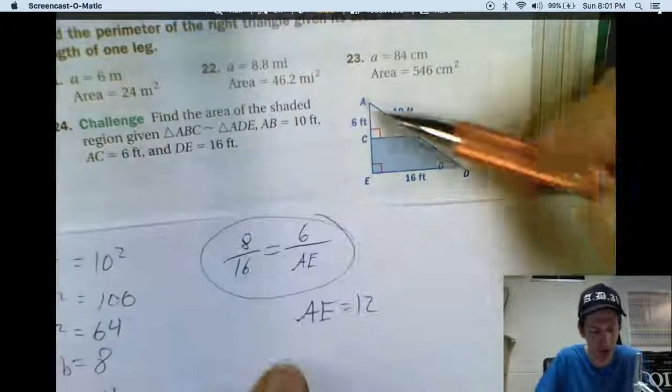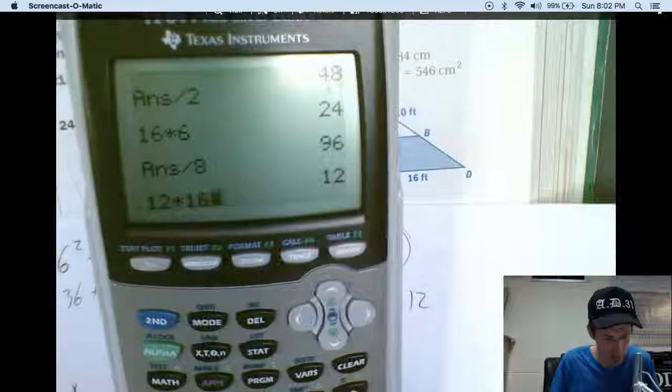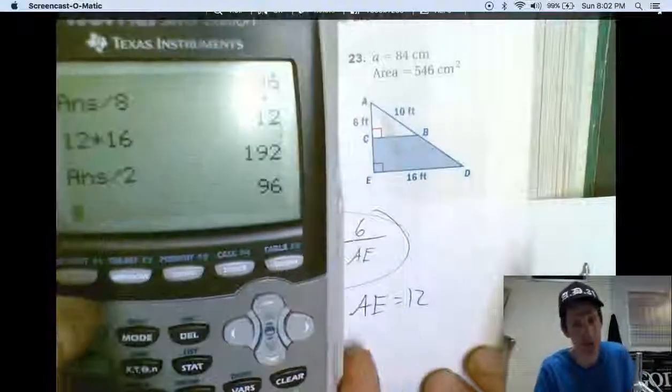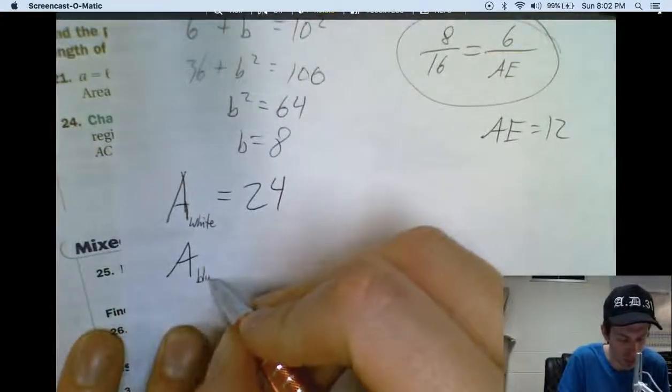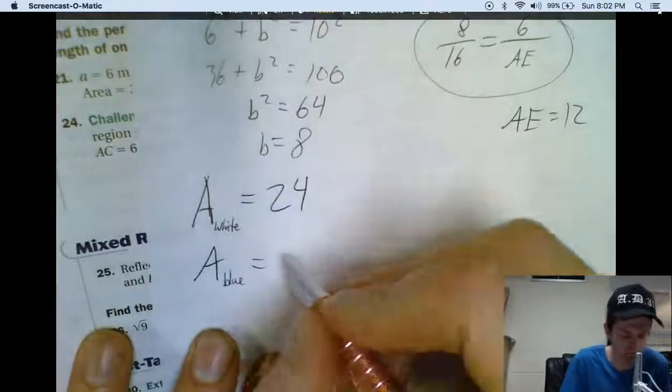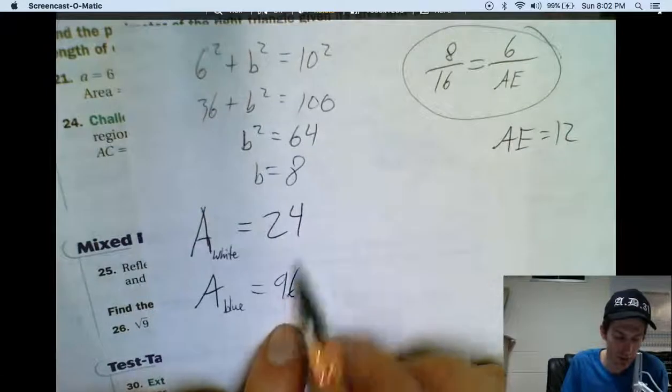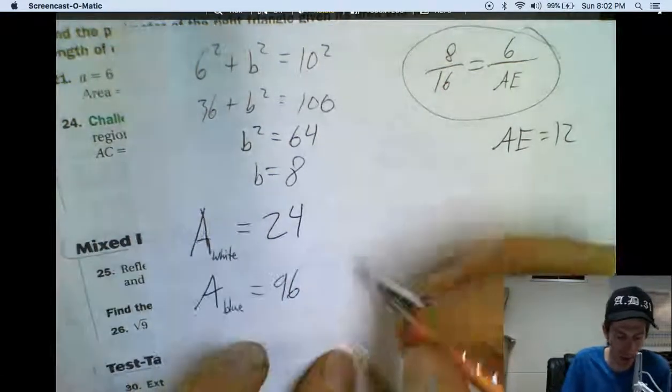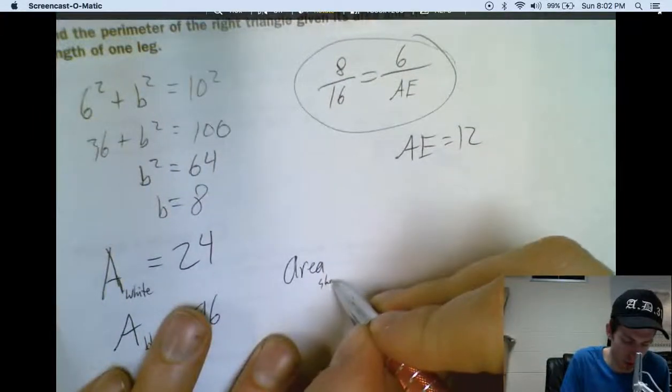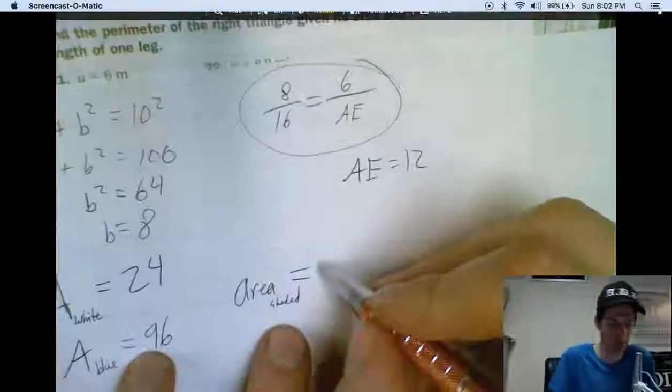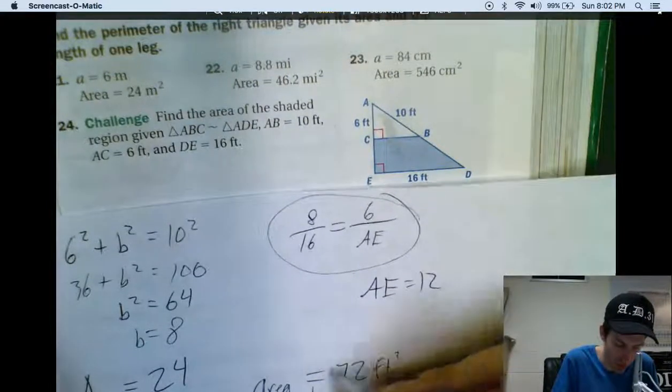Now, let's figure out the area of the whole big triangle. 12 times 16. 12 times 16. Divided by 2. That was base times height. Divided by 2. Is 96. So. Area. I'm just going to call it the blue triangle. Area of the blue triangle. Was 96. So. Let's just subtract 24 from 96. Do that in our heads. That would be 76. 72. Right? So. Area of the shaded region. Equals. 72. What would our units be? Feet squared. Or square feet.